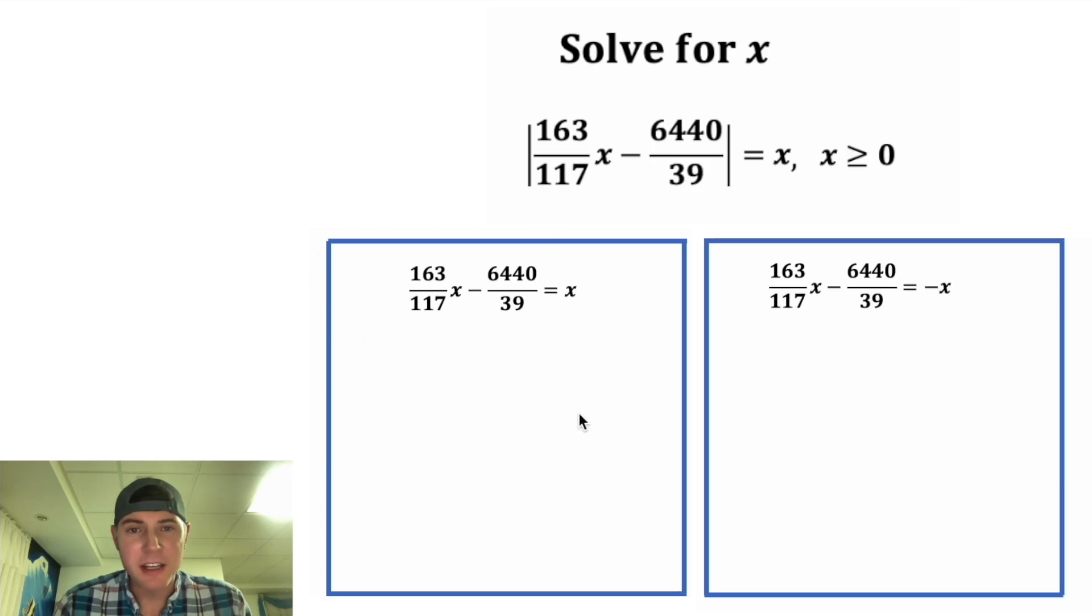So for this one up here, let's subtract x from both sides. In order to subtract these, they need to have a common denominator. So I'm going to rewrite this negative 1x as a negative 117 over 117x. And now when we subtract them, it'll have a denominator of 117. And 163 minus 117 is 46. And we can bring this down, and x minus x is equal to 0.